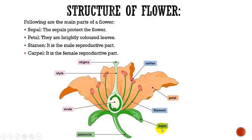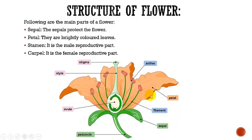The outermost whorl is made up of small green leaves, and these are sepals. The sepal protects the flower before it opens. The second whorl is made up of brightly colored leaves called petals. Many flowers have a scent and a sweet juice called nectar, which is made in tiny glands called nectaries found at the base of these petals.